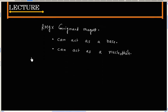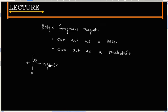A typical Grignard reagent is CH3MgBr. Here, carbon has a negative charge and magnesium has a positive charge. So this carbon can act as a nucleophilic center.